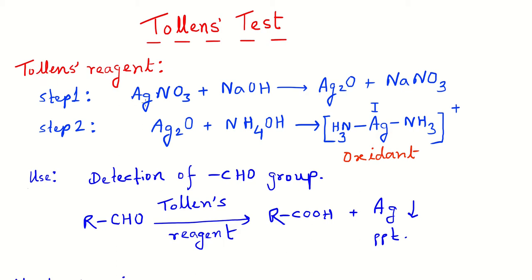How is the Tollens reagent prepared? It is prepared in basically two steps. In the first step, the silver nitrate solution is mixed with the sodium hydroxide solution in order to get the silver oxide precipitate.